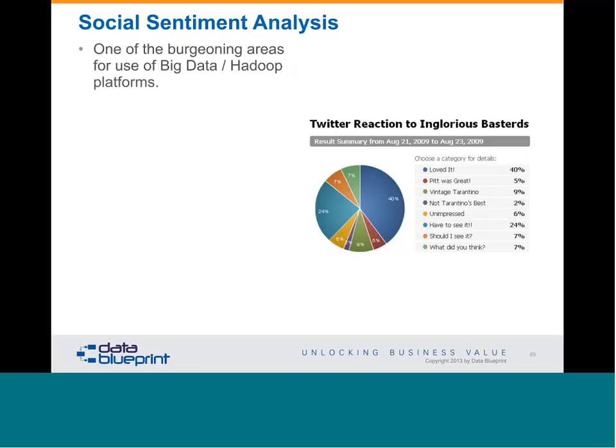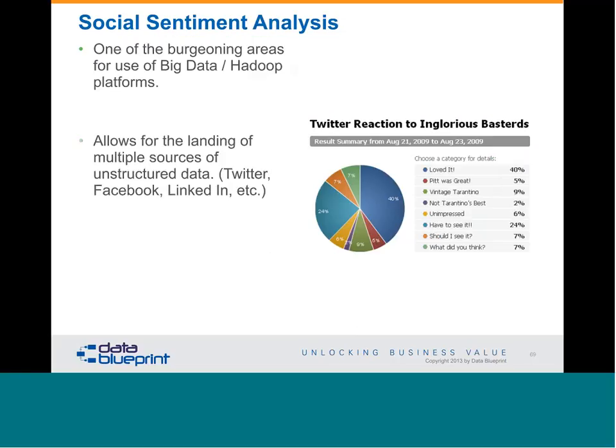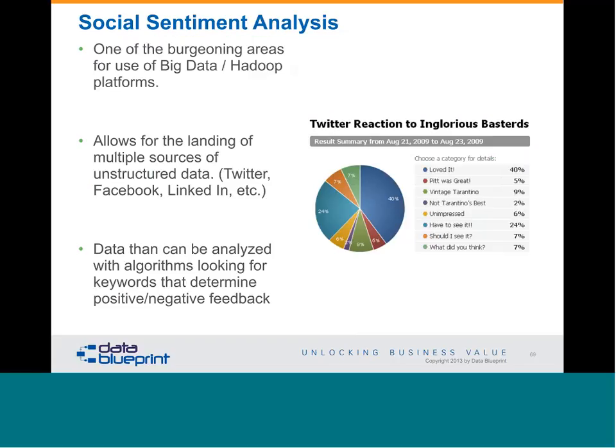Social sentiment analysis is one of the major areas that big data and Hadoop platforms are being used for. It allows for the landing of multiple sources of unstructured data from Twitter, Facebook, LinkedIn, and other social networks integrated into the platform. It's often used with algorithms looking for keywords that determine positive or negative feedback. A newer instance is using social media for voting mechanisms for TV and other media platforms to produce outcomes for live TV shows — all of that has to be processed through big data to read results and provide feedback in real time.